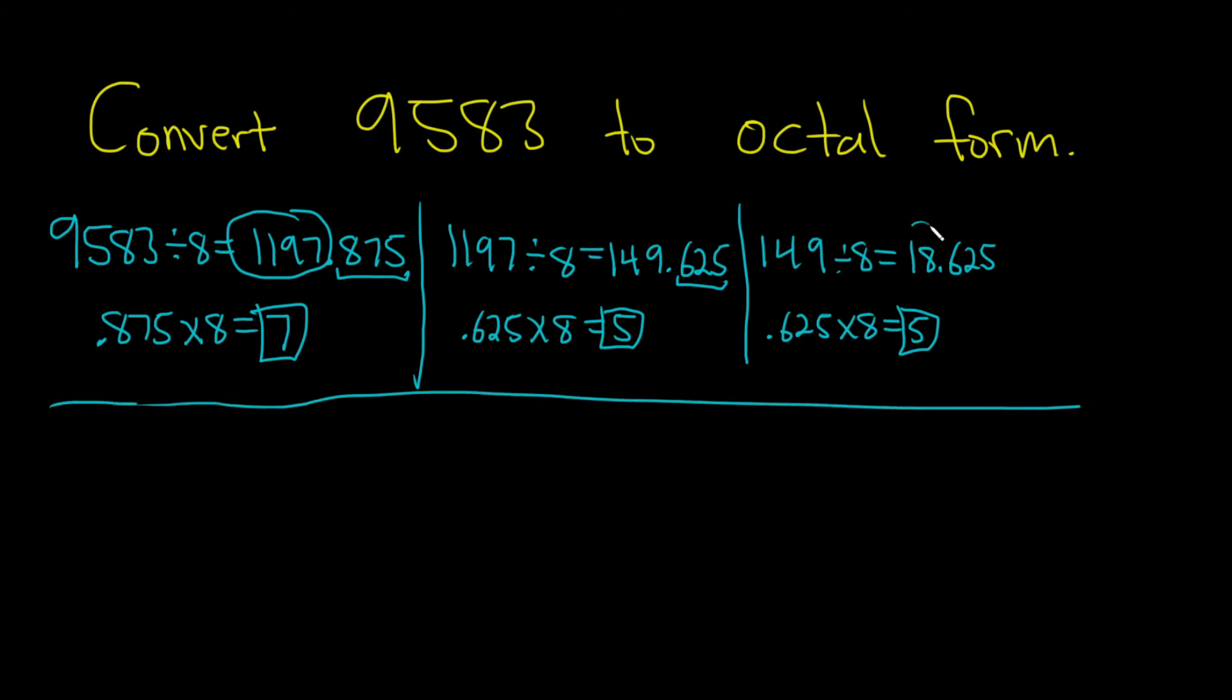So now we take 18 and divide it by 8. 18 divided by 8 is equal to 2.25. We want the remainder. So you take 0.25, multiply it by 8. So 0.25 times 8 is going to be 2. The remainder is 2.